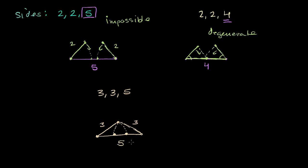So this one you absolutely could. And then there's another interesting question. Is this the only triangle that you could construct that has sides of length 3, 3 and 5?